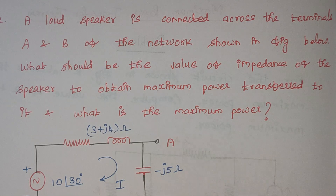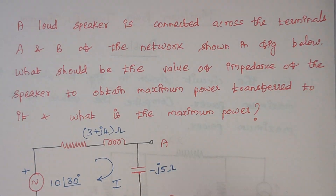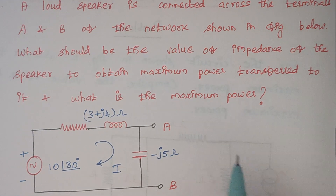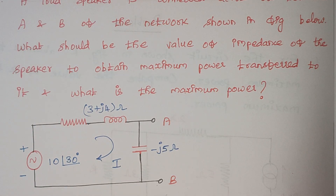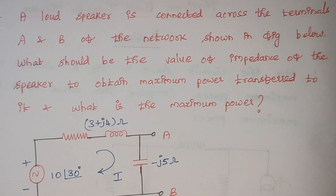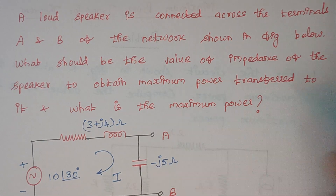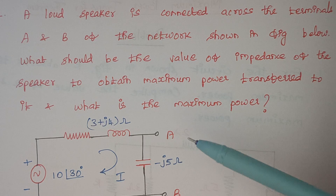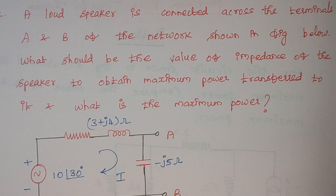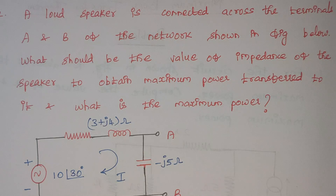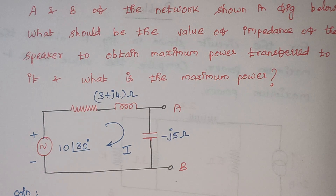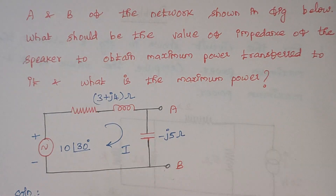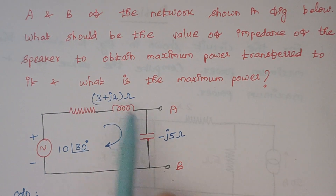The second problem is: a loudspeaker is connected across the terminals A and B. What should be the value of impedance of the speaker to obtain the maximum power transfer, and what is the maximum power? So between the terminals we are having a loudspeaker. We should calculate what is the impedance of that loudspeaker to have maximum power, and then we have to calculate what is the value of maximum power. When you look at this diagram, the first thing is we are calculating the value of I. The value of I is given by we are having a voltage source and impedances.